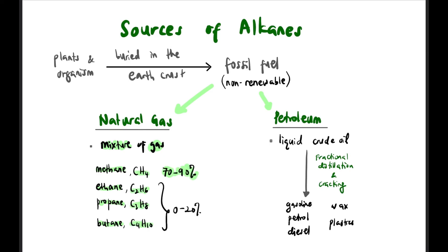Mostly it's methane—natural gas is actually 70 to 90% methane, and the rest are the others. The other source of alkanes is petroleum, which is a liquid crude oil. So this is the liquid form, whereas the previous one was gas.